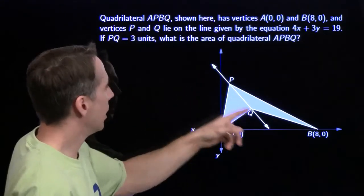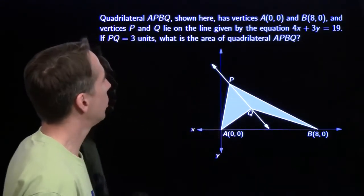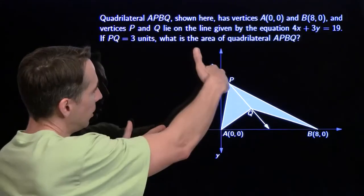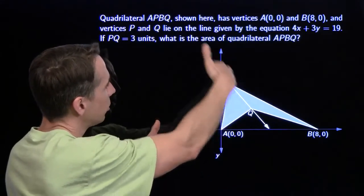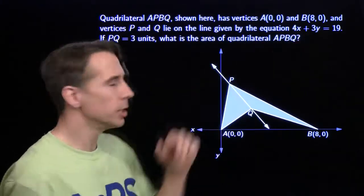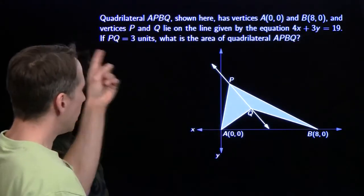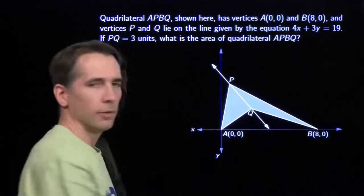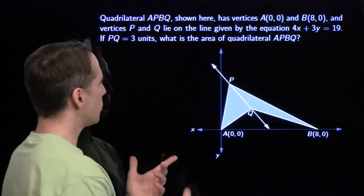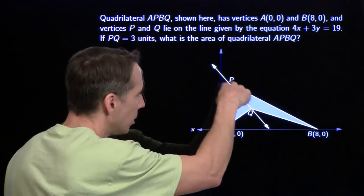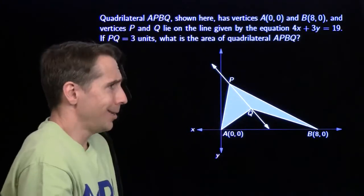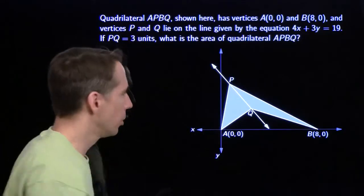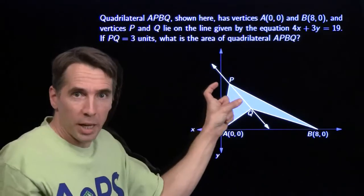Quadrilateral A, P, B, Q. We've got two vertices, and these two vertices P and Q are on this line given by this equation. PQ is 3. We want to find the area of the quadrilateral. This is pretty straightforward — they gave us this length. So I can just find the areas of these two triangles and add them up.